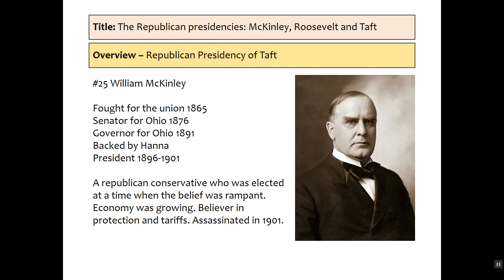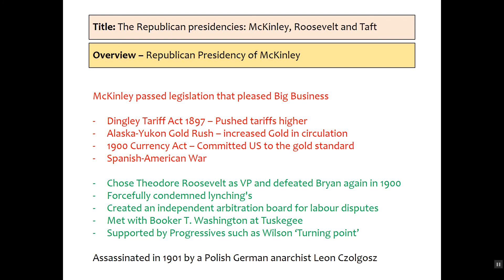He's assassinated in 1901. To balance the ticket, he had selected Theodore Roosevelt as Vice President, and when he's assassinated Roosevelt takes over. The balance of the ticket is in reference to the idea that Theodore Roosevelt is more progressive in his policies and can garner support from the people for those reasons, while on the right-hand side of the conservative spectrum is McKinley. He did pass much legislation that pleased big business — the Dingley Tariff and the Currency Act — conservative policies in favour of big business.